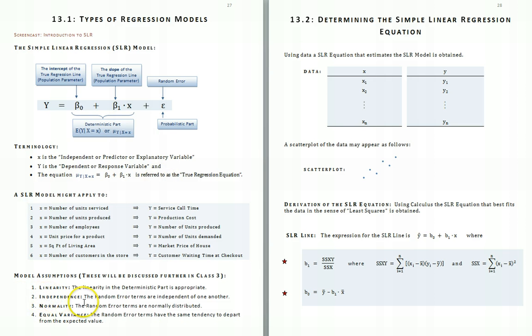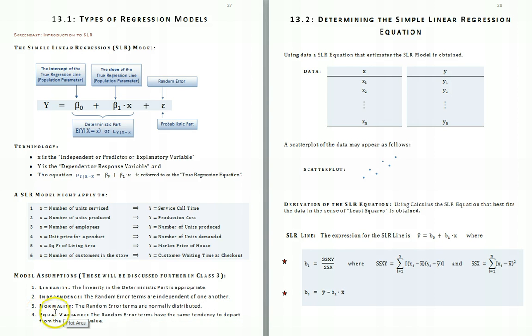The three assumptions on the random error are: independence — the random error terms are independent of one another; normality — the random error terms are normally distributed; and equal variance — the random error terms have the same tendency to depart from the deterministic part of the model.